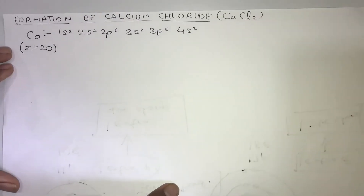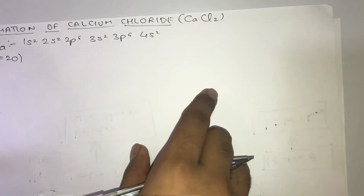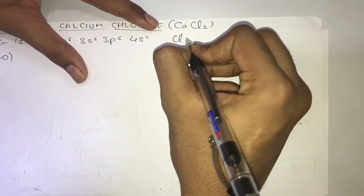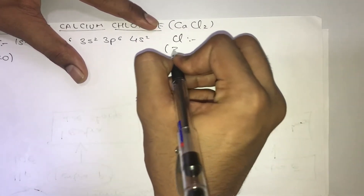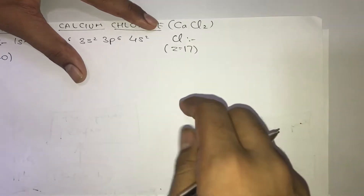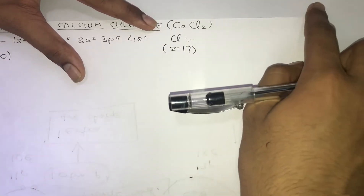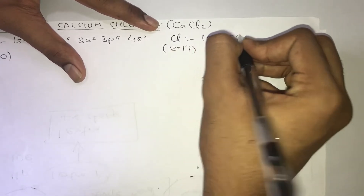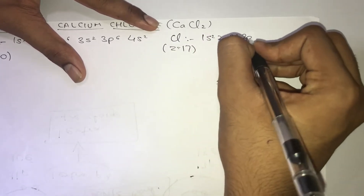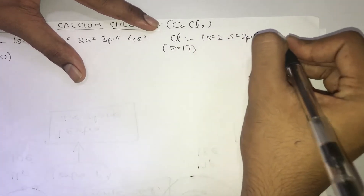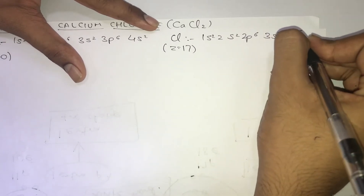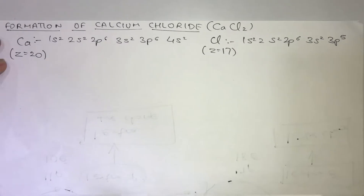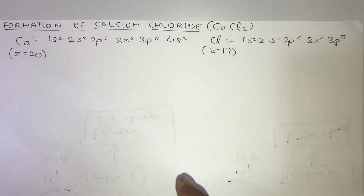Similarly, for calcium chloride you require a chlorine atom. The atomic number of chlorine is 17, and its electronic configuration becomes 1s2 2s2 2p6 3s2 3p5.